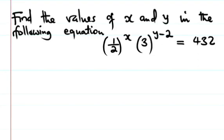Let's see the solution of this question. It's about exponential equations. The question involves finding the values of x and y in the equation: one half to the power of x, multiplied by 3 to the power of y minus 2, equals 432.